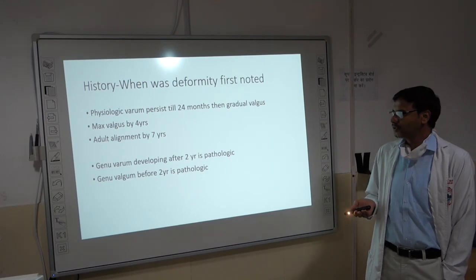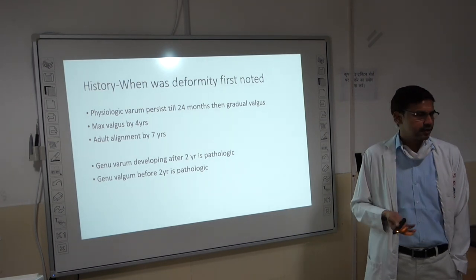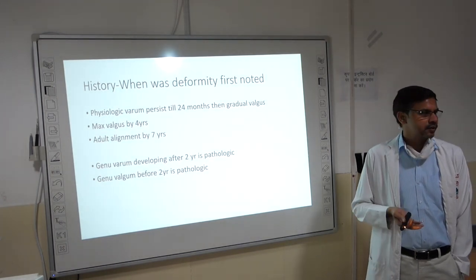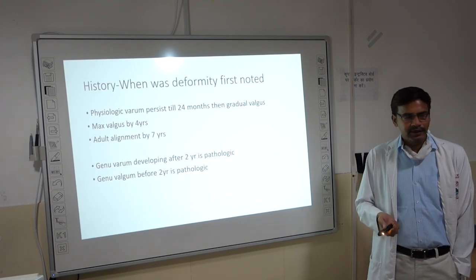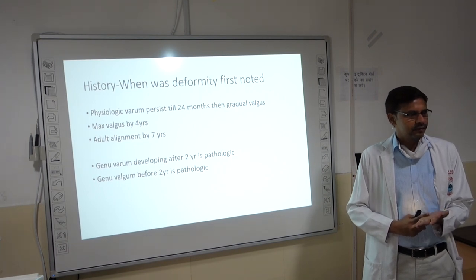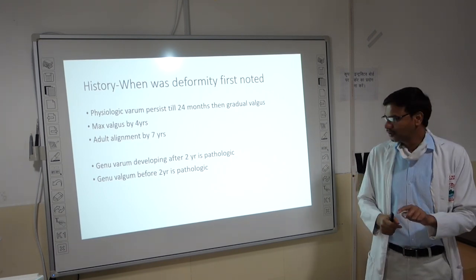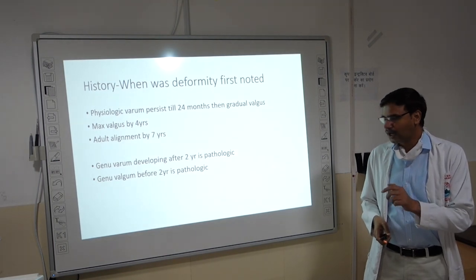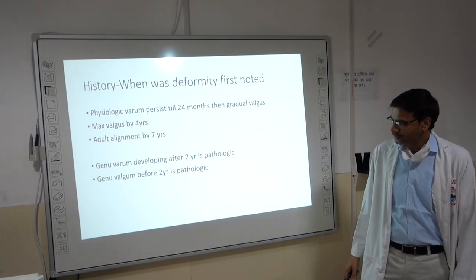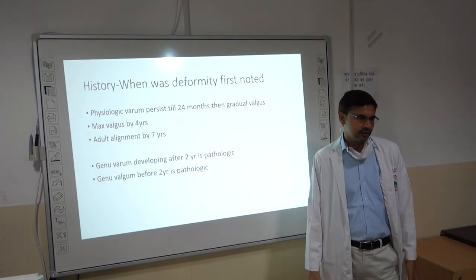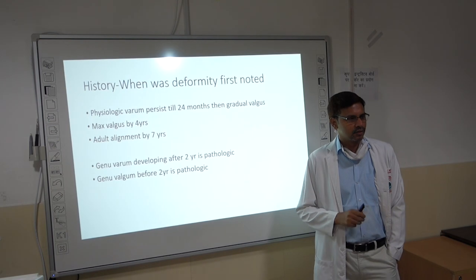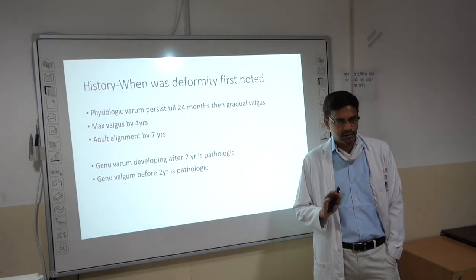Physiological varum persists till 2 years of age, then gradual valgus happens, maximum valgus by 4 years, and adult alignment is reached by 7 years. Any deviation from this — if the deformity is unilateral, or if genu varum develops after 2 years — is of course pathological. Genu valgus before 2 years is almost certainly pathological, and unilateral deformity is always pathological.